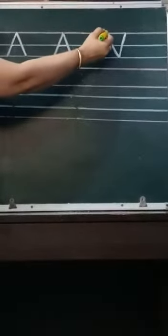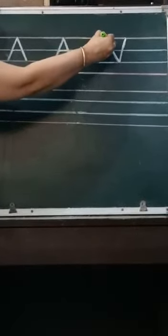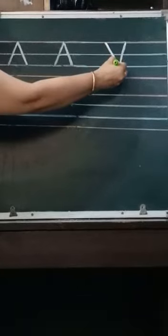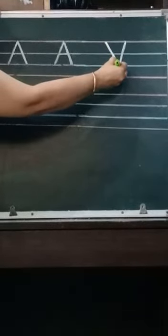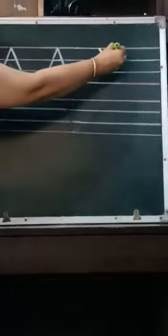Now, V. Put pencil on the top red line. Make a slant line. Don't move the pencil. Go up. Touch the top red line. This is letter V.